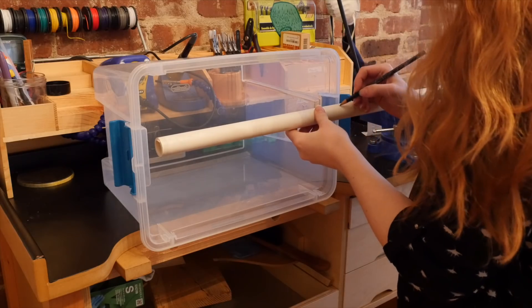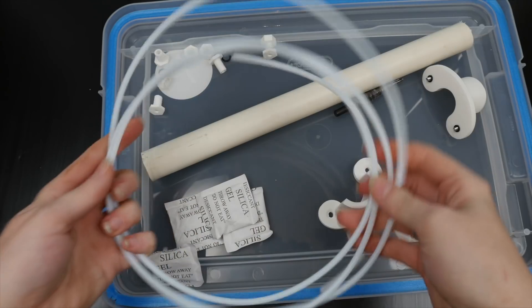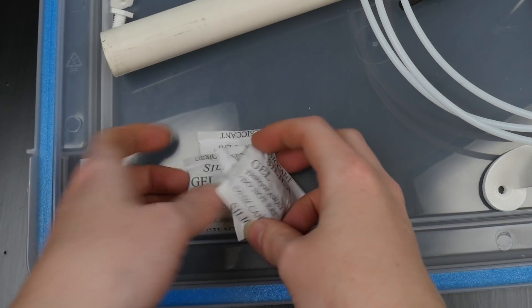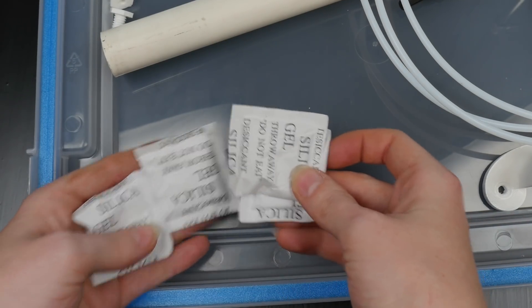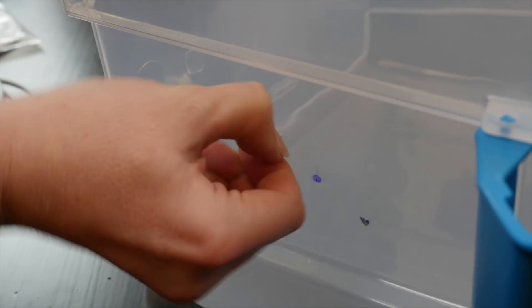Besides the box, you'll need a piece of PVC pipe or closet pole to match the length of your box, some teflon tubing to feed your filament to your printer, some silica gel packets to absorb moisture from the air inside the box, a step drill and a screw gun, some o-rings and screws, and some 3D printed parts I found on Thingiverse.